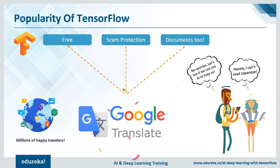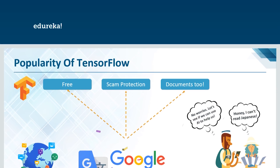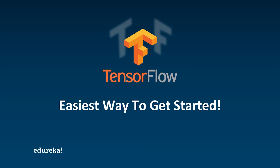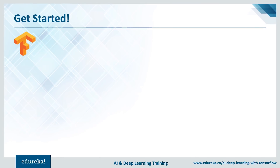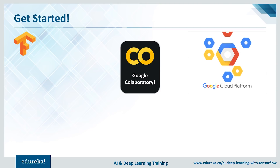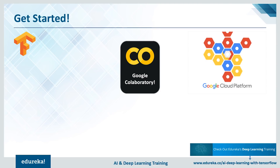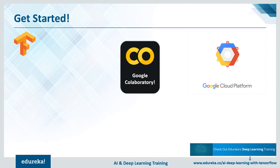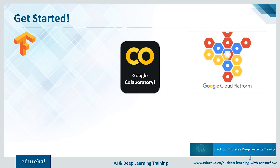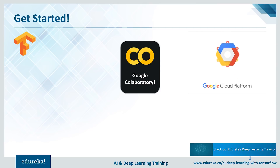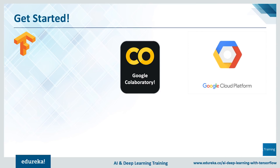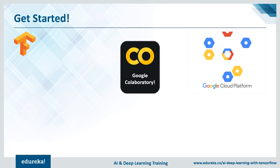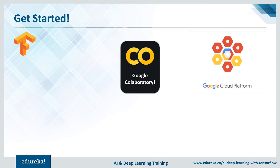This is just one of the amazing use cases of TensorFlow — there are thousands more. The best part is that it's really easy to get started. There are many easy ways to get started, but in my opinion, Google Colaboratory is by far the easiest. It's basically a Jupyter notebook hosted on the Google Cloud platform. It automatically allocates memory and provides all the tools you need to get started.